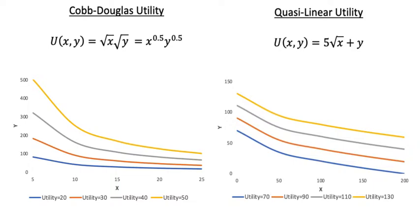The main point to notice here is that as x increases, the gap between the Cobb-Douglas curves is getting smaller and smaller. But it is constant in the quasi-linear curve.